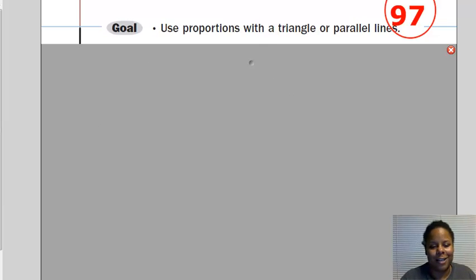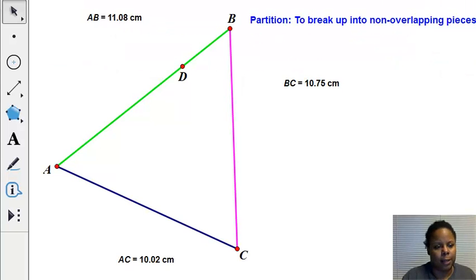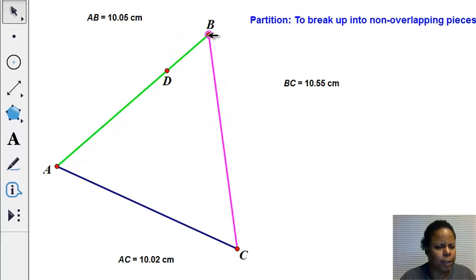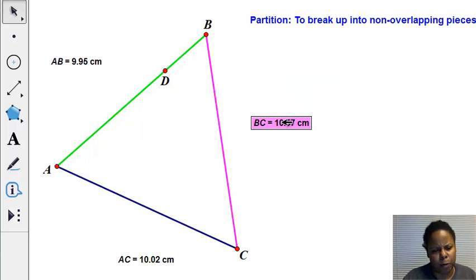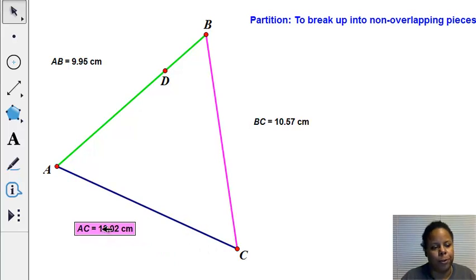Proportions and triangles. So let's take a look at a triangle. As we can see, there's no special triangle. Triangle ABC: AB is 9.95, the green side, the purple side is 10.57, and the dark purple side is 10.02. So it's a regular scalene triangle.